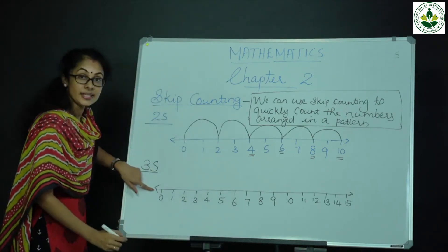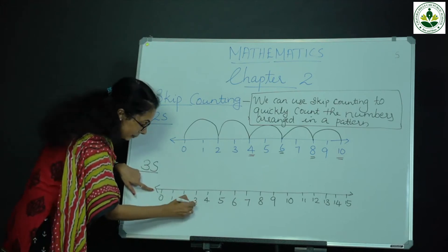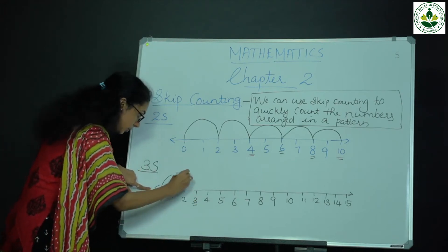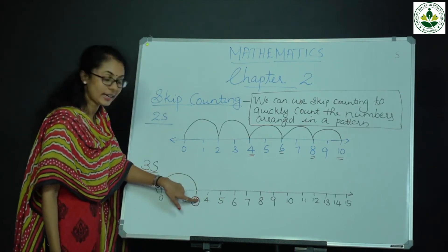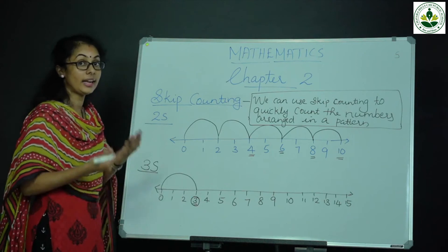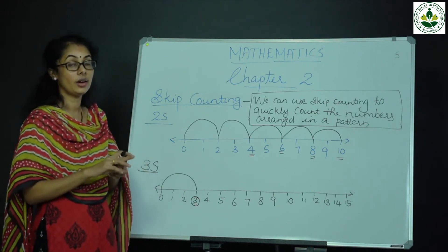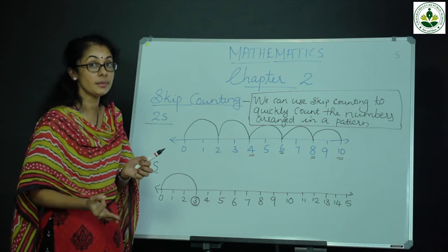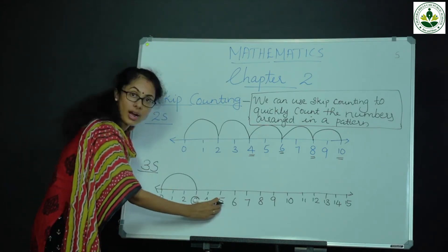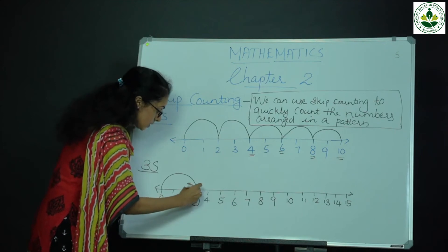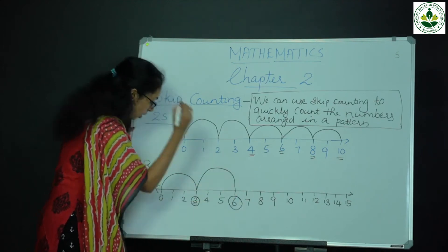Starts from 0: 1, 2, 3. Then again counting how many times? 3 times: 1, 2, 3 — so from 3 to 6.